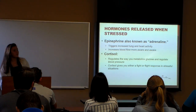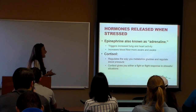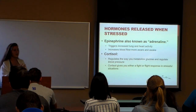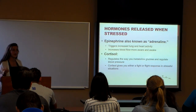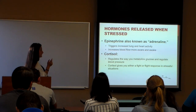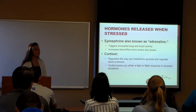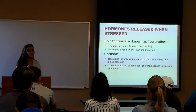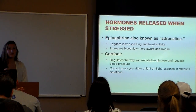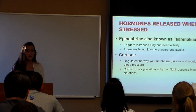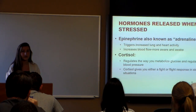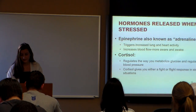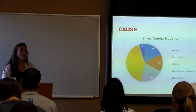So now I'll talk about hormones being released when stressed. There's a term called epinephrine, which is also known as adrenaline, and it triggers your lungs and heart activity to go really fast whenever we're stressed. There's also a hormone called cortisol, which regulates the way you metabolize glucose and regulates blood pressure. Whenever you have this you have a fight-or-flight response, which means some people who are stressed don't eat at all, or others overeat — that's how they adapt to being stressed.